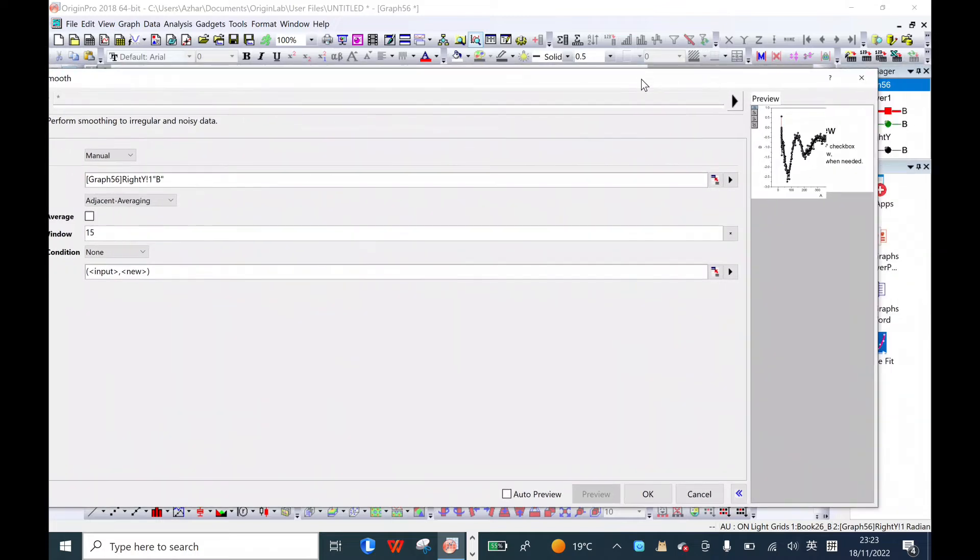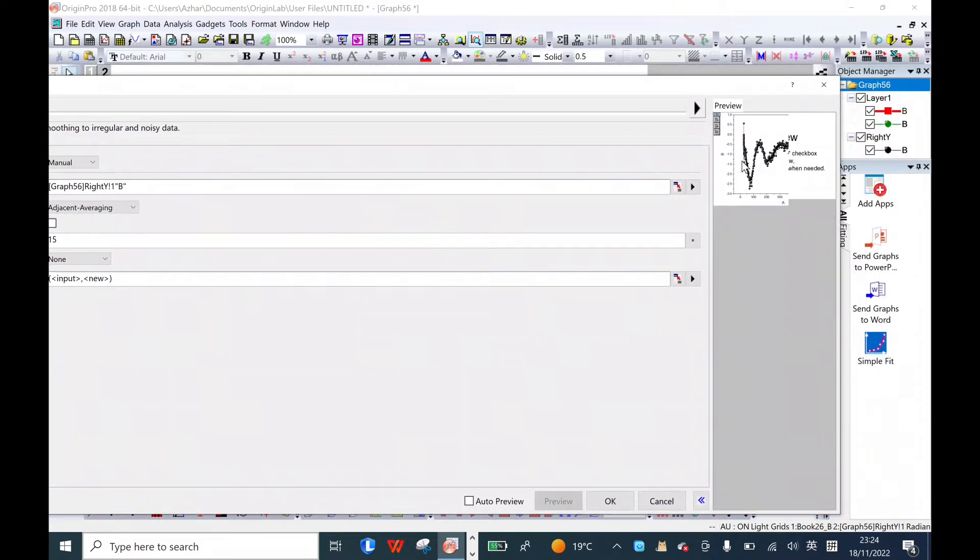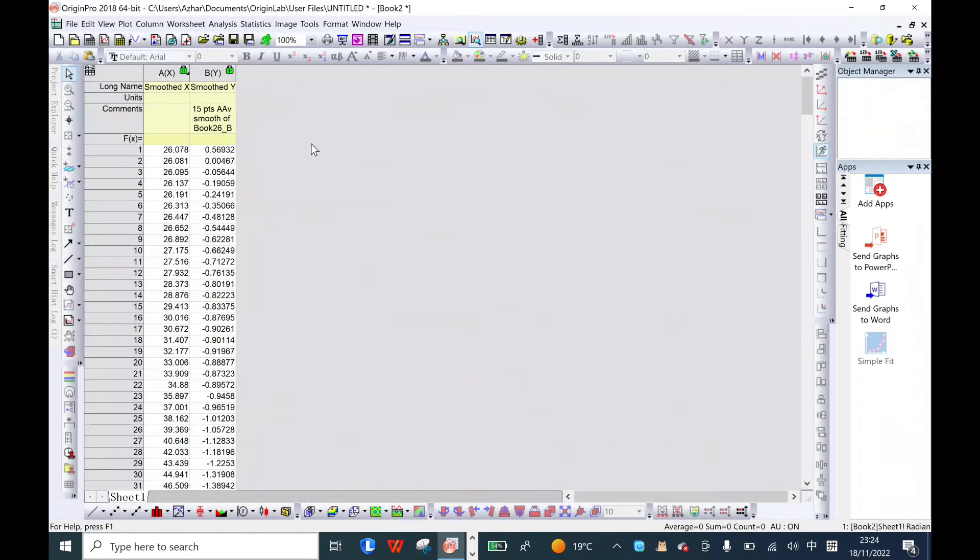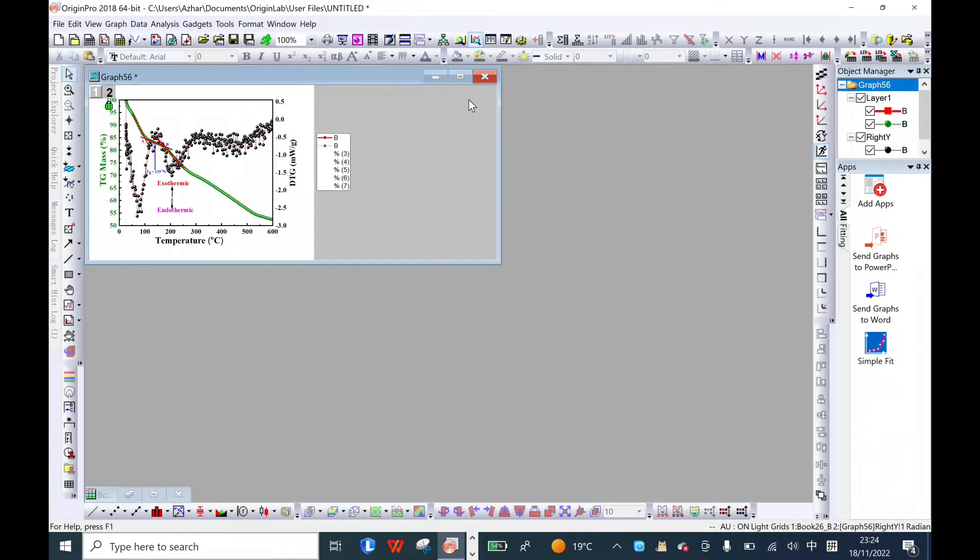It will appear here. You see one is the red line and another one is the black line. The red line is the new adjusted line. I will click here.